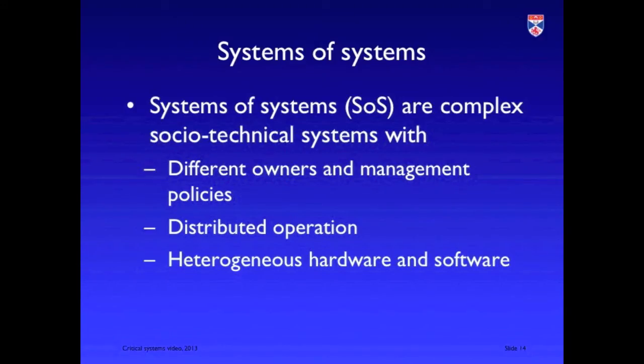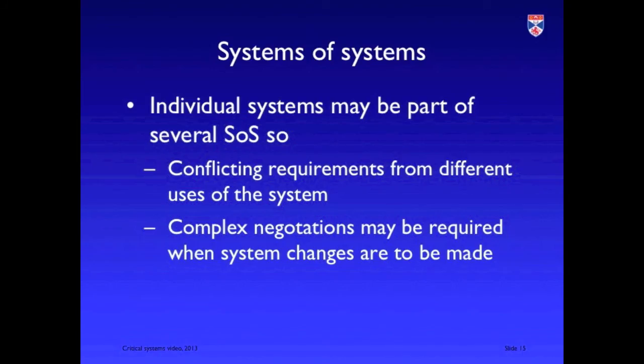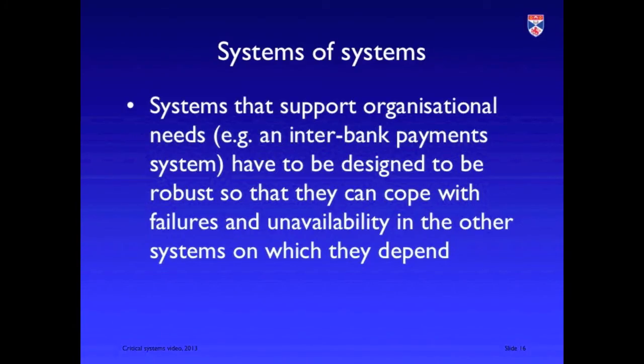Critical systems are complex socio-technical systems — owned and operated by different people, generally distributed, with heterogeneous hardware and software. Each individual system may be a member of different systems of systems, which means we can get conflicting requirements from different users, and any change requires very complex negotiations because it affects a number of different systems. We need to design critical systems so that they are robust and can cope with failures of other systems — just as a critical system has to cope with failures in its critical system stack, like an operating system failure, it may also have to cope with failures in other external systems.